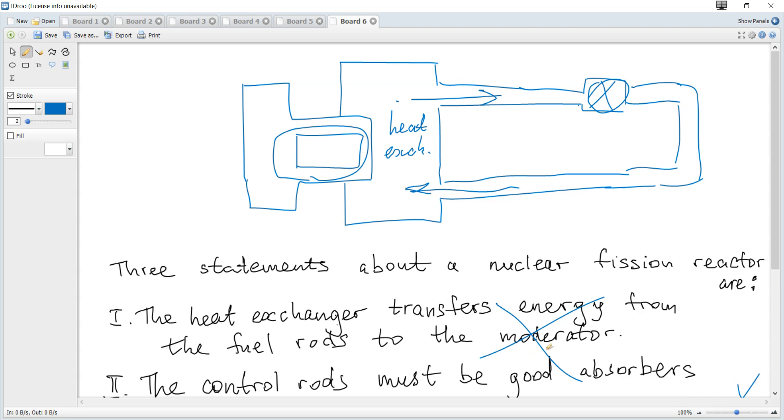And then the water heats up and becomes vapor. Vapor rotates dynamo and electricity, electricity is produced.